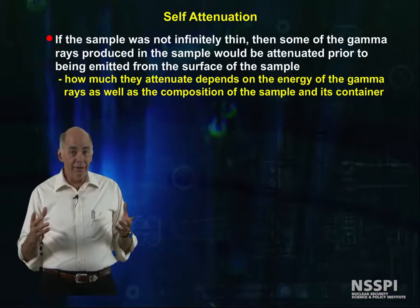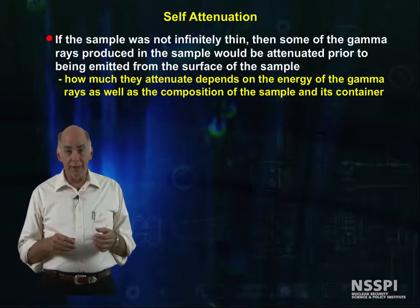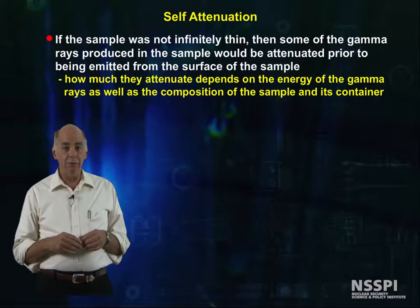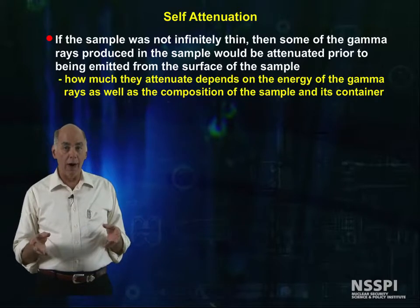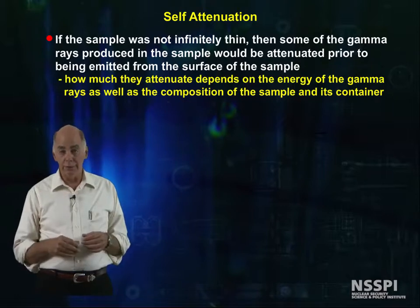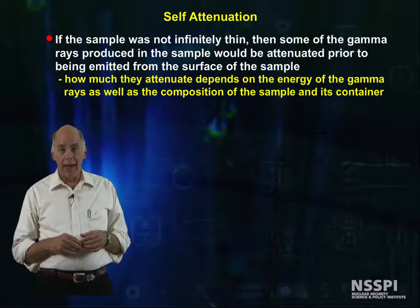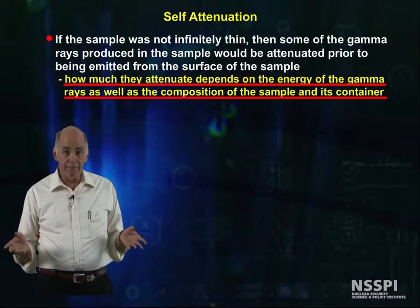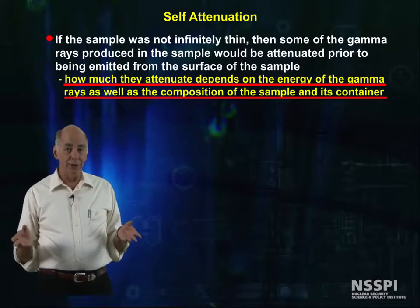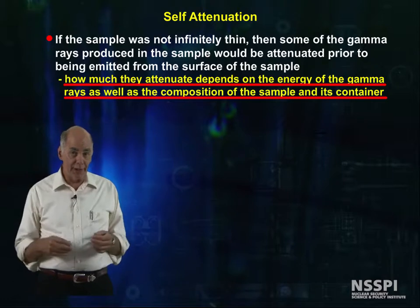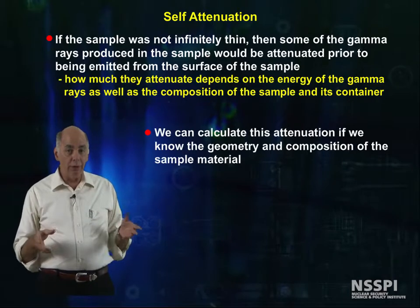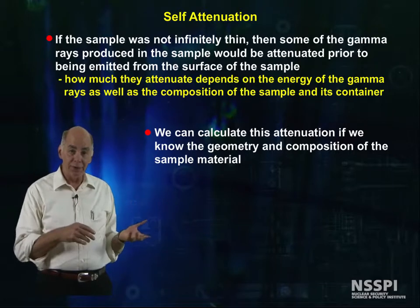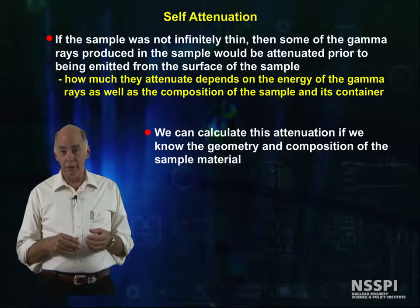If the sample is not infinitely thin, then some of the gamma rays produced in the sample will be attenuated prior to being emitted from the surface of the sample. How much they are attenuated depends on the energy of the gamma ray, as well as the composition of the sample and its container. We can calculate this attenuation if we know the geometry and the composition of the sample material.